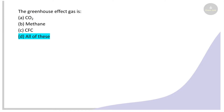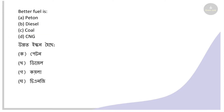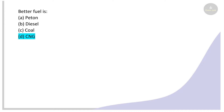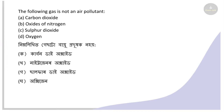The greenhouse effect is caused by gases including carbon dioxide, methane, CFC, and nitrous oxide. All of these are greenhouse gases. Next question: Which is the better fuel? The right answer is CNG, because it produces less noise and fewer harmful combustion products.